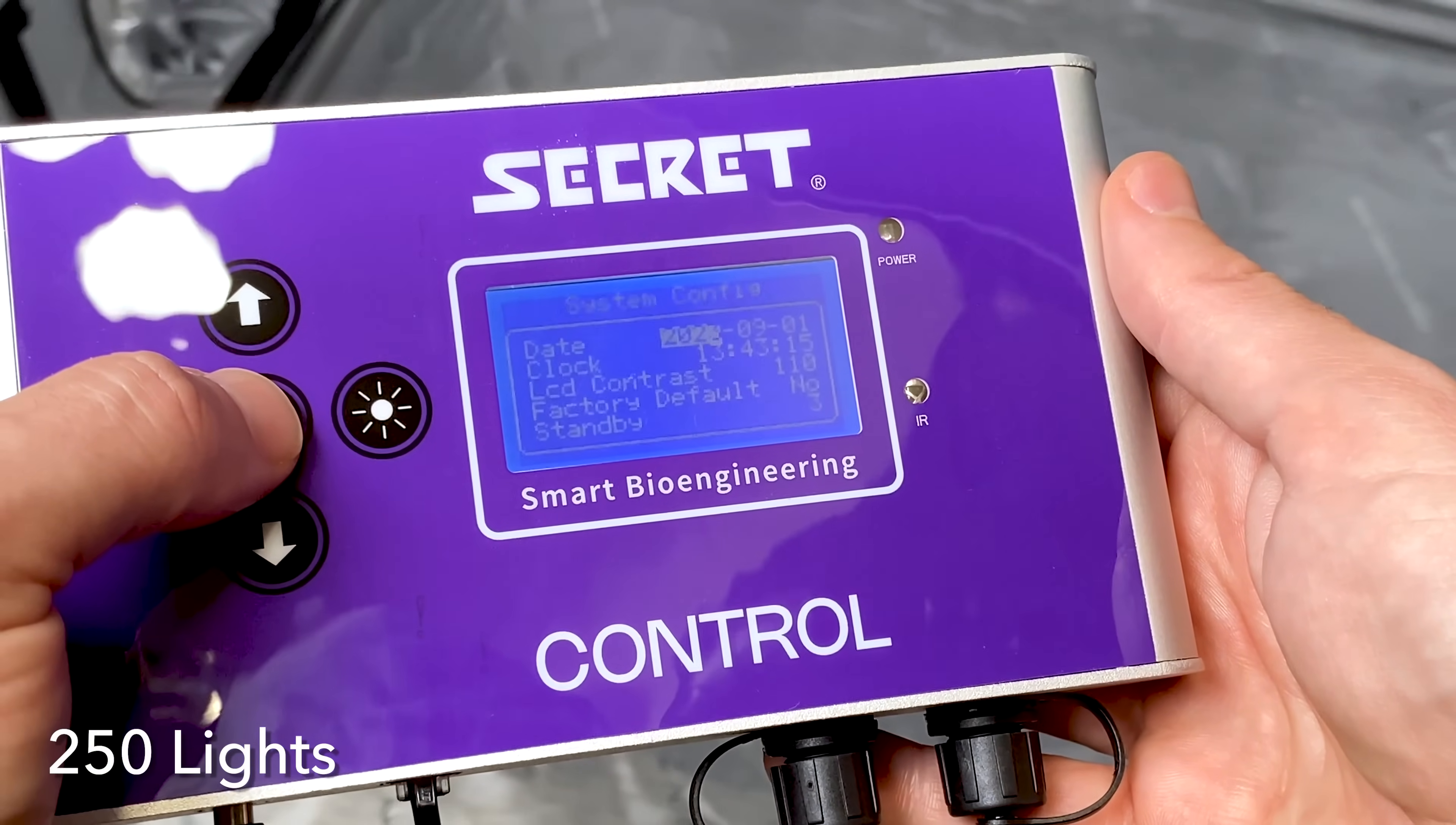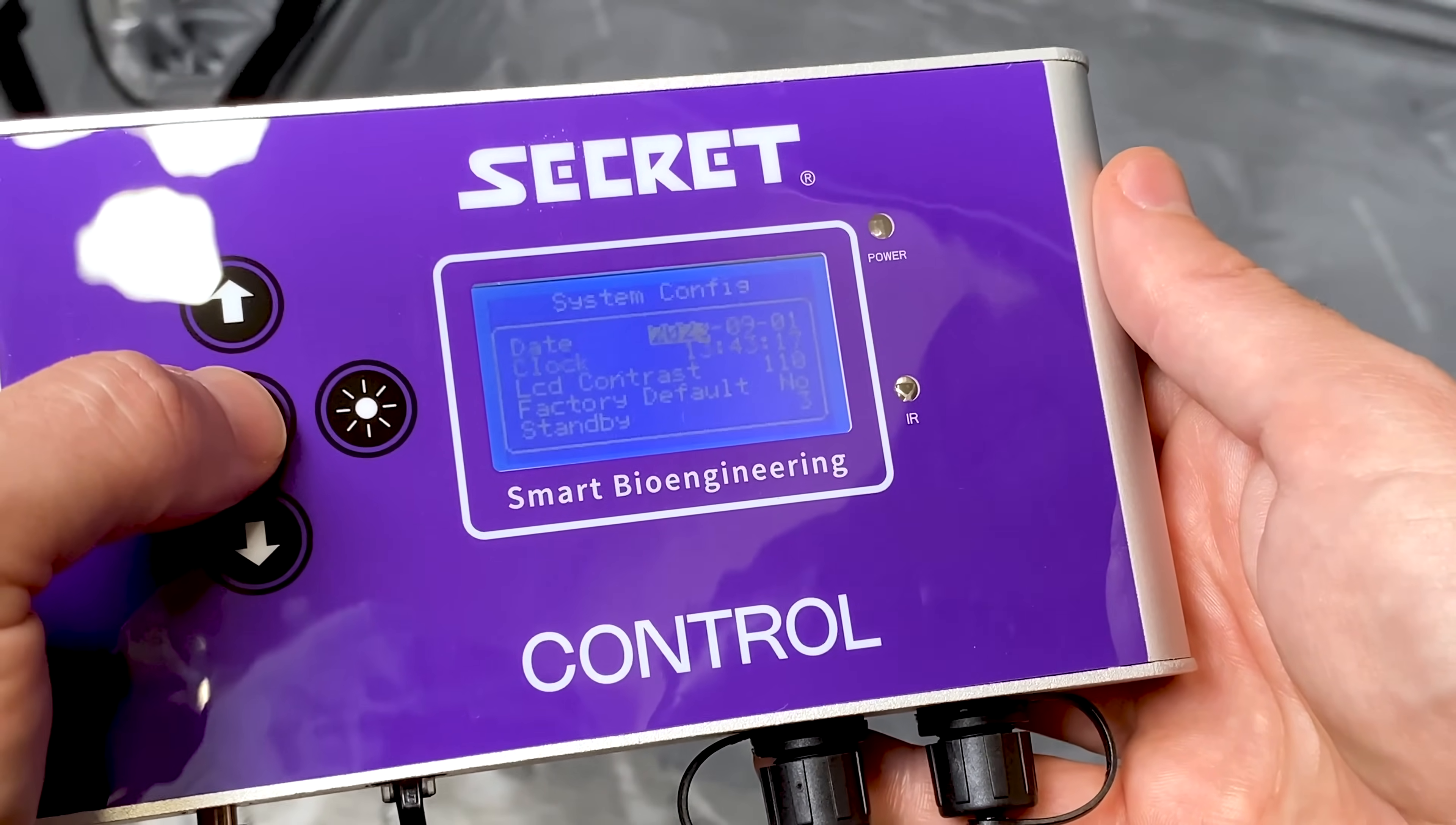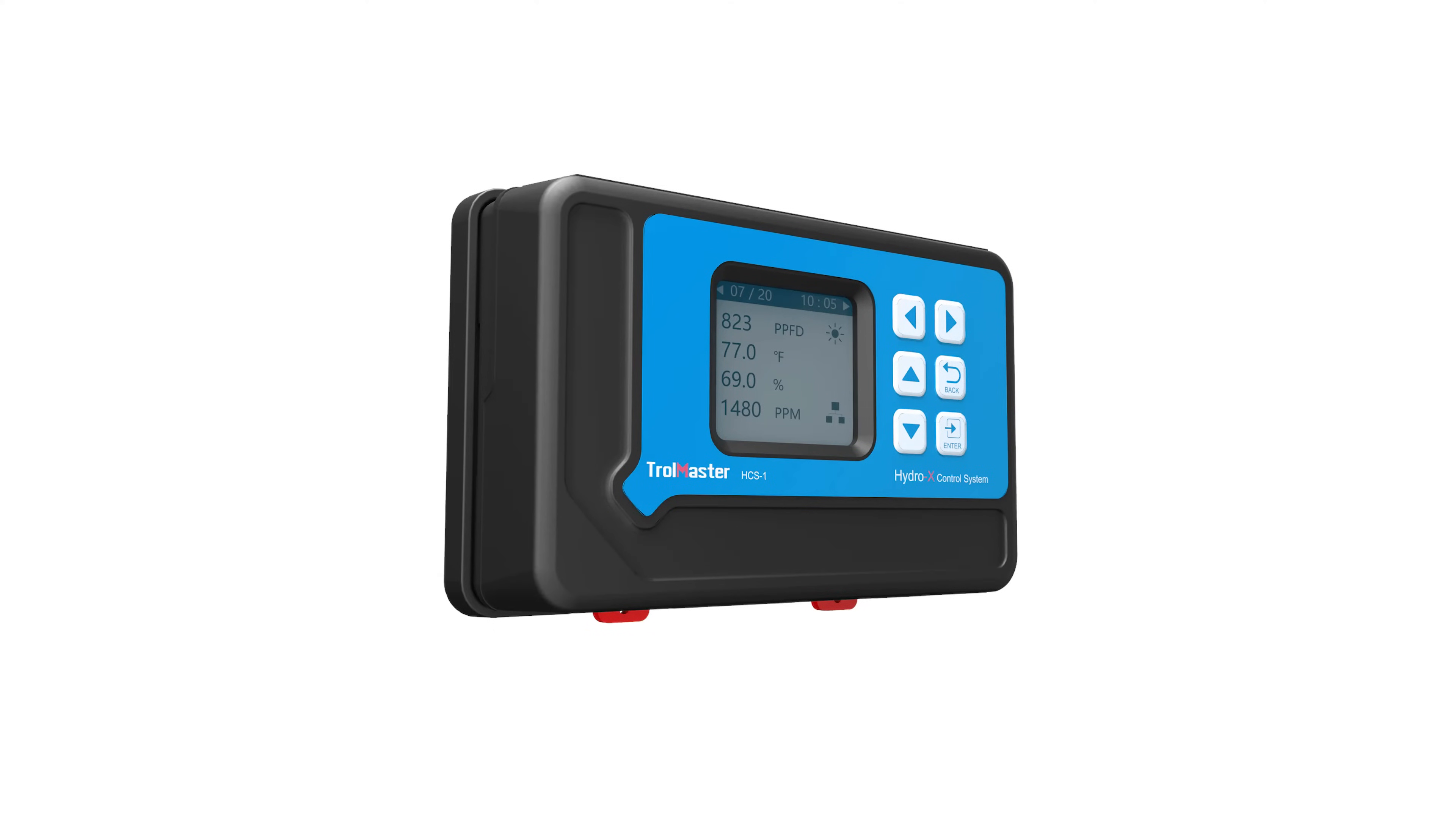You can control up to 250 Secret Lighting fixtures with a single controller. And if you're using a third-party 0-10 volt controller, the Secret Lighting adapt, not included, makes integration seamless.